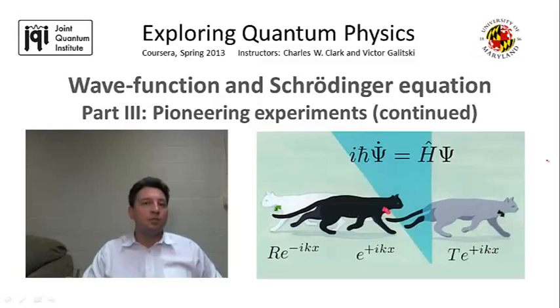However, this latter picture was also questioned by a number of theorists back in the beginning of the last century, and notably by Prince Louis de Broglie, who suggested that massive particles can sometimes behave as waves.